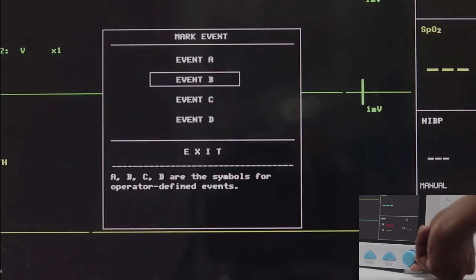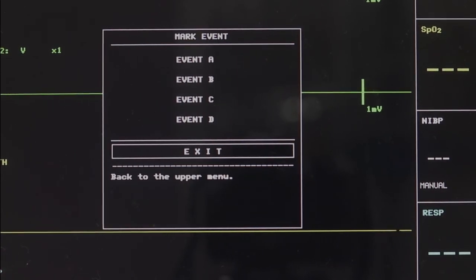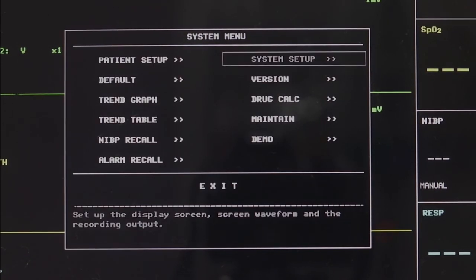Mark Event: The monitor has four types of events. You can specify their representations by yourself. Click on Exit to return to the system menu dialog box.